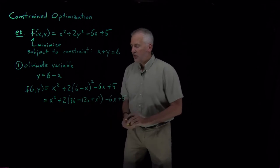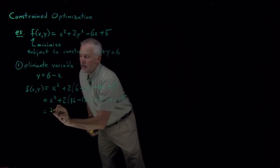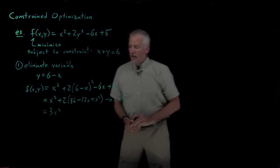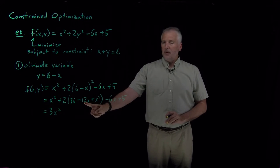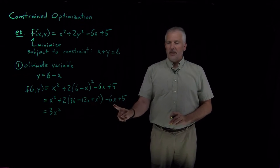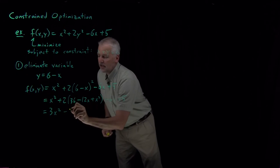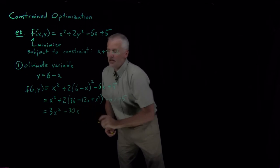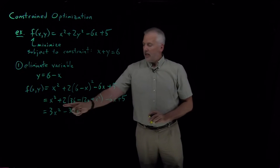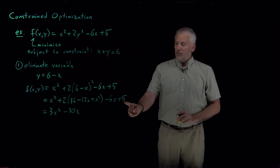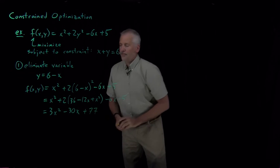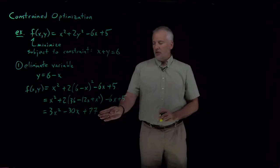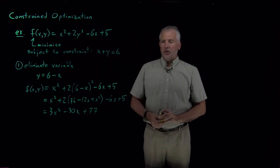So that gives me 3x². Linear terms, I've got 2 times -12, gives me -24x here, another -6 from here. So that's a total of -30x. And then I've got 72 as a constant term and 5 additional. So that's +77.